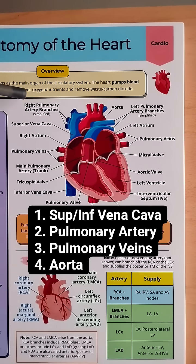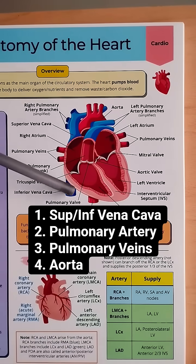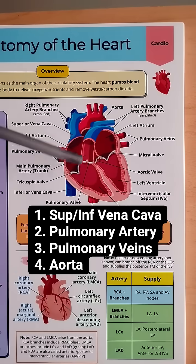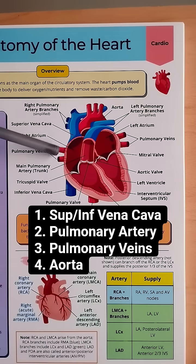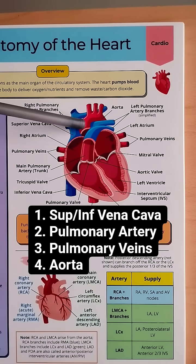Then there are four great vessel groupings: the superior and inferior vena cava, the main pulmonary artery, the pulmonary veins, and the aorta.